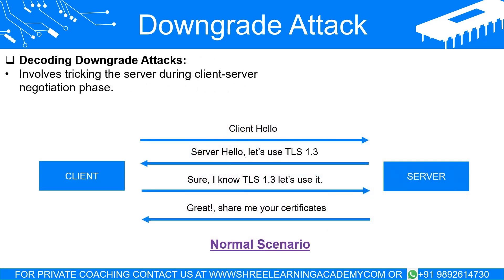Decoding downgrade attacks: a downgrade attack in its simplest form is a type of security exploit where the attacker tries to force a network connection to use an older, less secure form of communication. Think of it like forcing two people speaking in a sophisticated code language to revert to plain English, making it easier to understand their conversation. When your computer client talks to a server like a website, they typically use advanced encryption to secure their conversation.